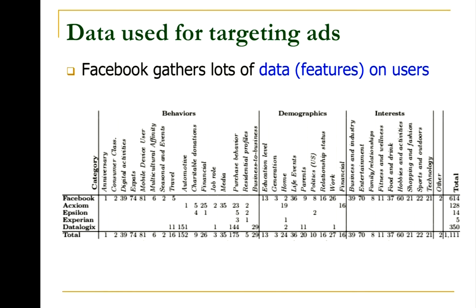In demographics, Facebook has information like your education, life events, whether you're a parent, whether you're married, and financial data. In interests, it tries to understand whether you're interested in technology or sports and various subcategories. Under behaviors, it tries to understand whether you are an expat, what type of purchasing behaviors you have, and so on. Looking at the total, Facebook tries to infer about 614 different attributes about every single person on the platform.